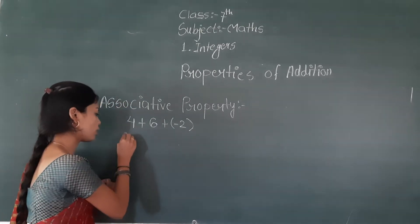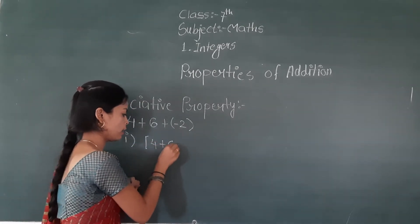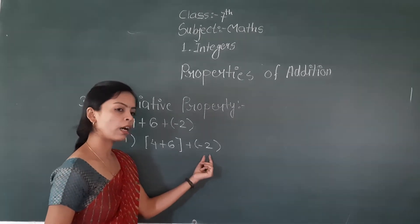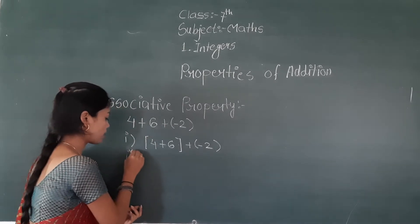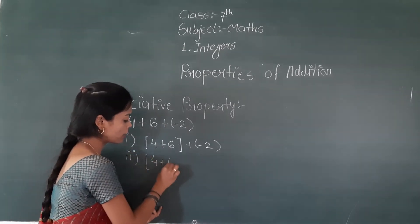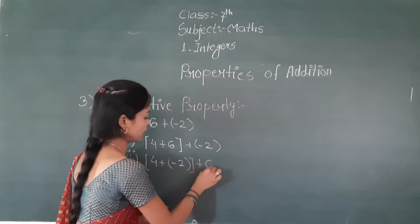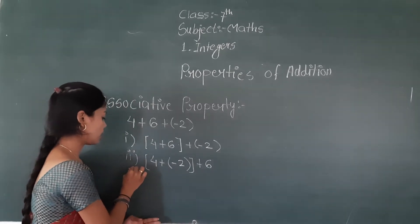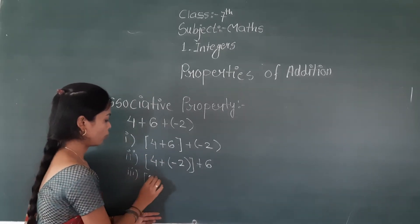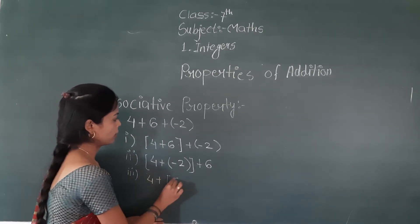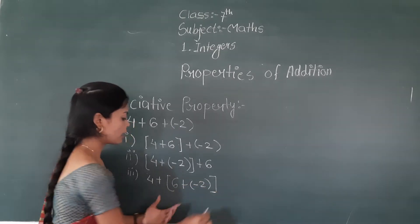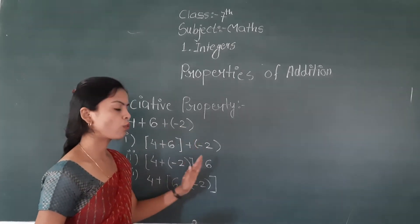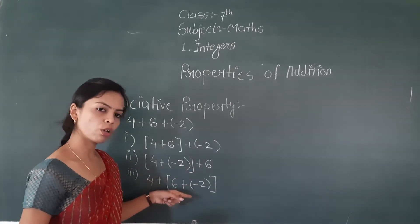What are the three different ways? First one: you add four plus six, and then plus minus two. The third way is four plus the bracket of six plus minus two. You can check the answers of all of them — the answer is the same.